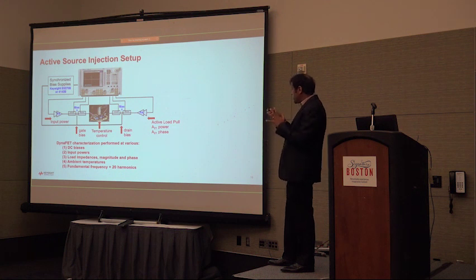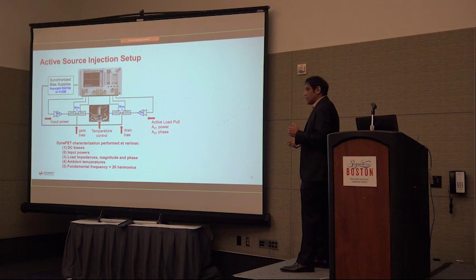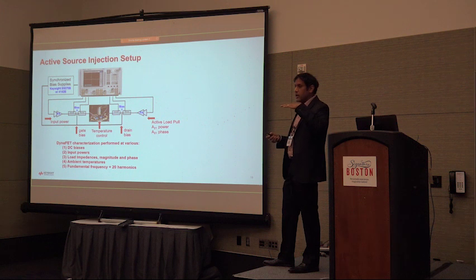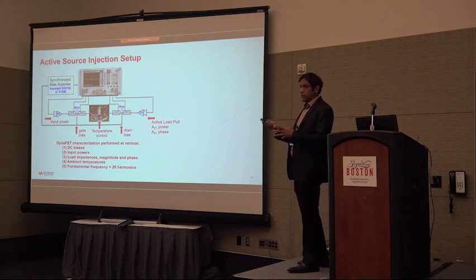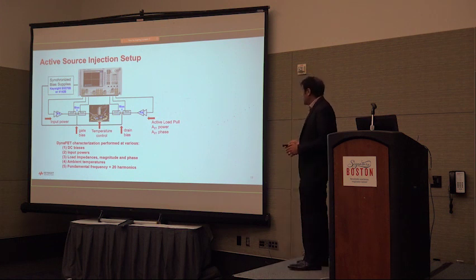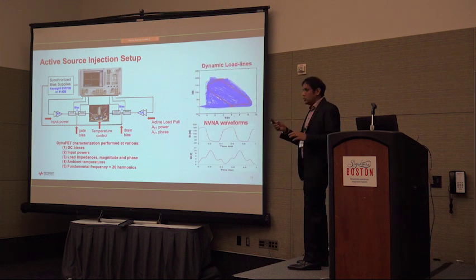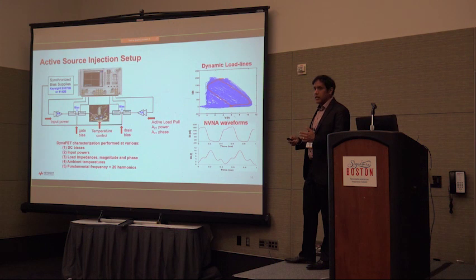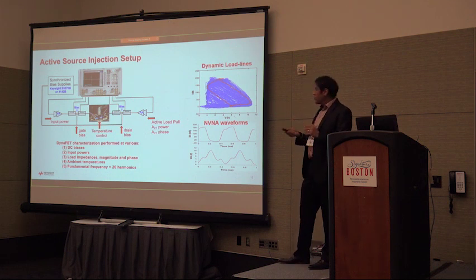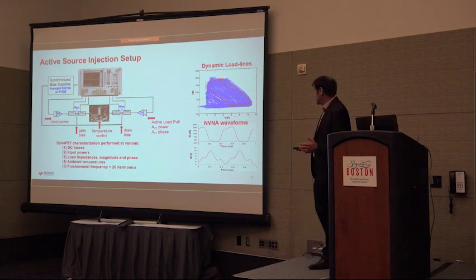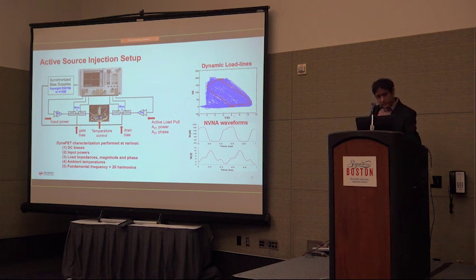DynaFET requires a rich set of input data: at every bias point, numerous input powers, numerous load impedances (magnitude and phase), and different ambient temperatures. An input signal at around 100 MHz with 20 harmonics thereof is applied, measuring up to about 2 GHz. This produces a large dataset varying input power, gate bias, temperature, drain bias, and active load pull. Those frequency components can be converted into time-domain representations showing a dynamic load line, exercising the device in a space not accessible with conventional curve tracer measurements.